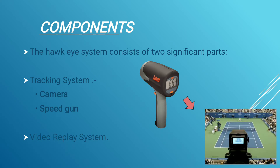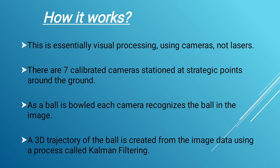Hawkeye uses two components: a tracking system and a video replay system. The tracking system includes cameras and speed sensors. Hawkeye works using visual processing via cameras, not lasers. There are seven cameras placed at strategic points around the ground, and as the ball is bowled, each camera recognizes the ball in the image.